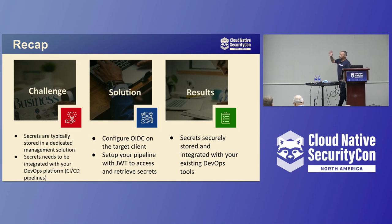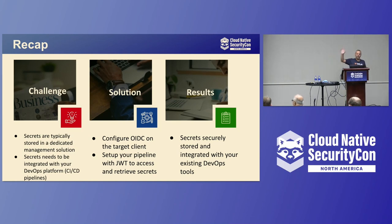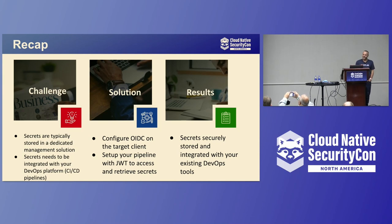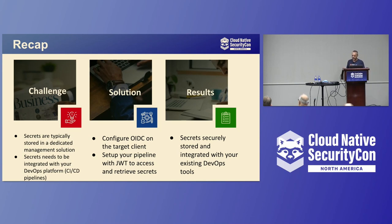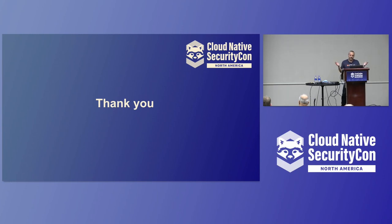If there's one slide I want you to remember from this talk, it's this one. The challenge: secrets are typically stored in a dedicated management solution, but engineers need those secrets integrated with their DevOps platform to run CI/CD pipelines. The solution: if you don't have a built-in integration or you don't want vendor lock, configure OpenID Connect on the target client and set up your pipeline with the JWT to retrieve those secrets. The result: secrets are securely stored and integrated with your existing DevOps tools. Thank you — I hope you find this presentation useful.